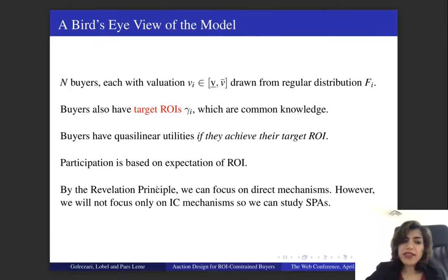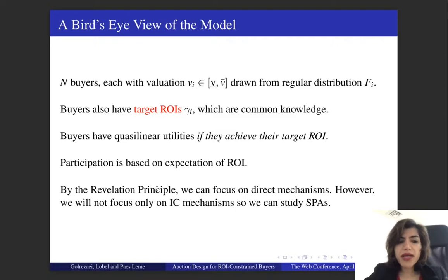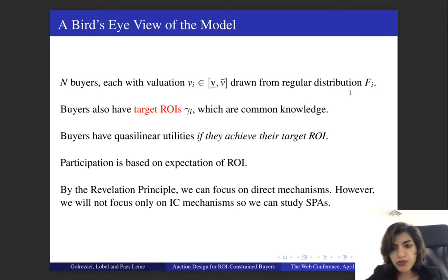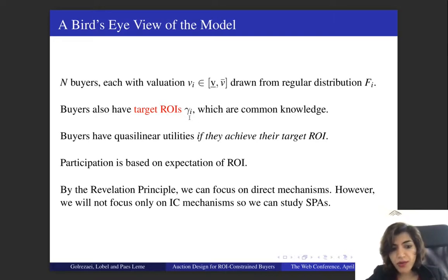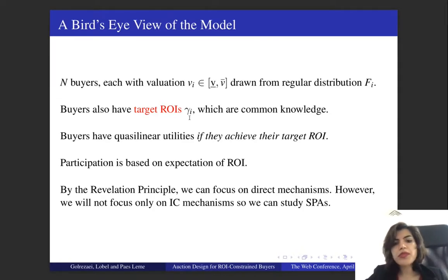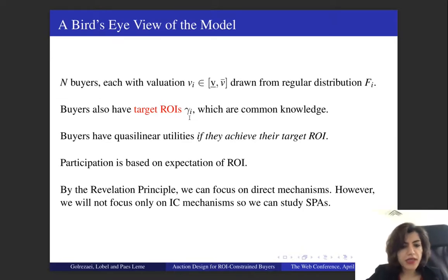Now let's look at the model. Our model is quite simple. There are N buyers. Each buyer has some valuation V_i, drawn from a regular distribution F_i. Buyers have some target ROIs, Gamma_i, which are common knowledge. The fact that we treat ROIs as common knowledge is because considering private ROIs makes the problem technically very challenging and the main insight may get lost in a very complex model.